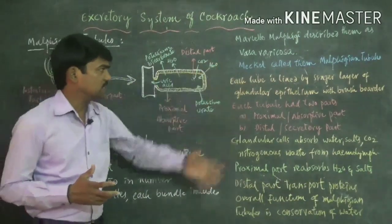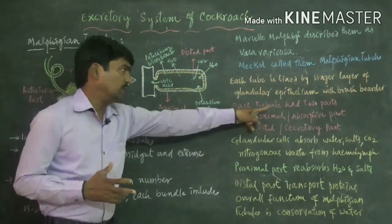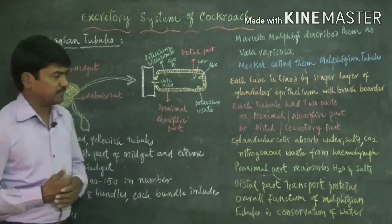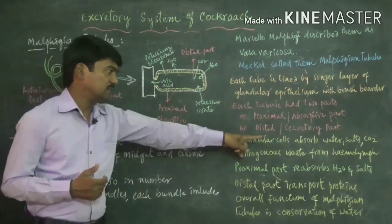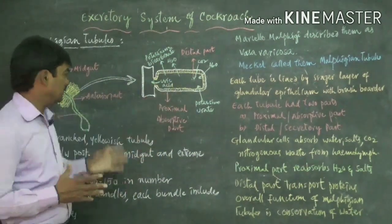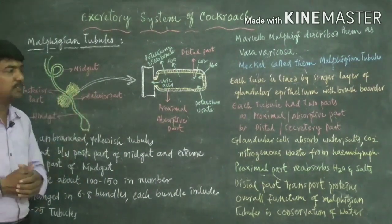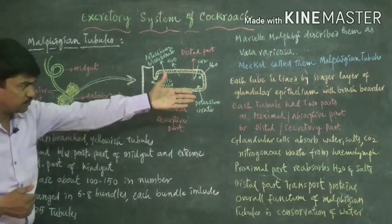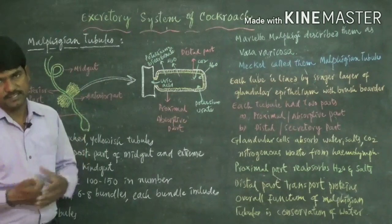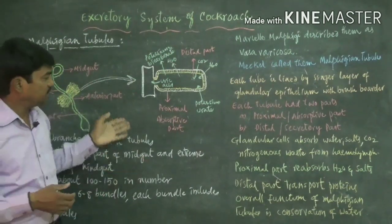Each tubule has two parts: the proximal or absorptive part and the distal secretory part. The glandular cells absorb water, CO2, and nitrogenous waste from the haemoleum. The Malpighian tubules are located inside the haemoleum and are connected to the hindgut and midgut.